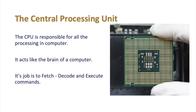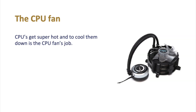The next important component is the Central Processing Unit, or CPU. This is responsible for all the processing in a computer — it acts like the brain. Its job is to fetch, decode, and execute commands you give the computer. All software is basically instructions, so those instructions need to be fetched, decoded or translated, and then executed. The CPU can get very hot because it performs billions of calculations per second, so it needs its own fan, normally mounted on top of the CPU to keep it cool.